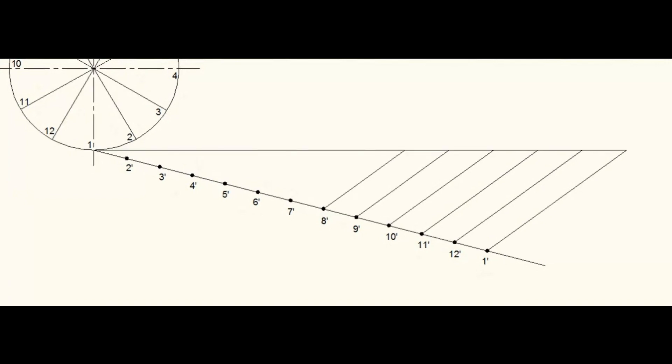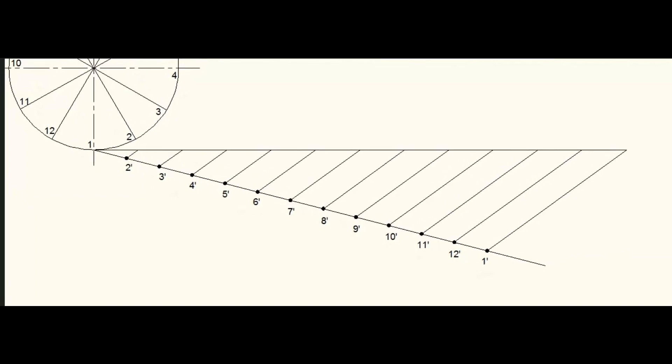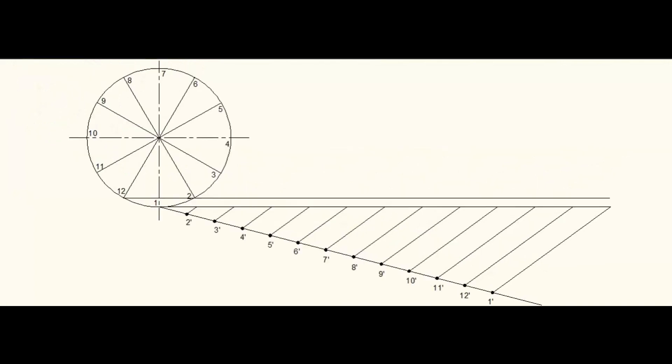The last point should be joined to the end point of the base line. Parallel to this line, draw lines through all other points. Now the original line also gets divided into equal number of divisions.